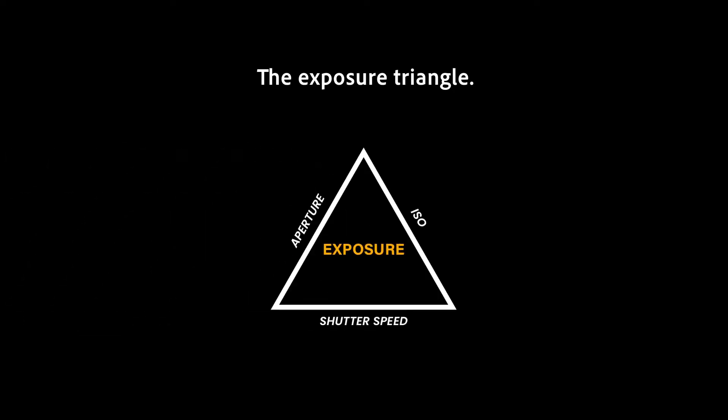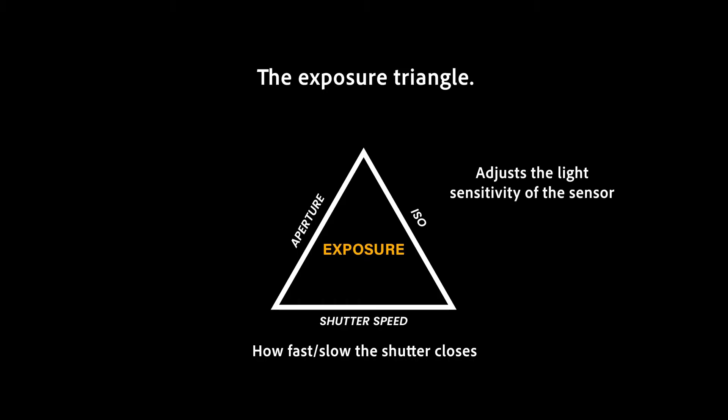Aperture is what controls the amount of light that enters your camera. To understand this fully, we need to understand that absolutely any photo is reliant on the exposure triangle. If you haven't seen this before, it is controlled by three major settings. We have shutter speed, controlling how fast or slow your shutter closes — this affects the time of your exposure and helps you freeze motion. We have ISO, which is used to indicate the light sensitivity of film or, for digital cameras, adjust the light sensitivity of the sensor.